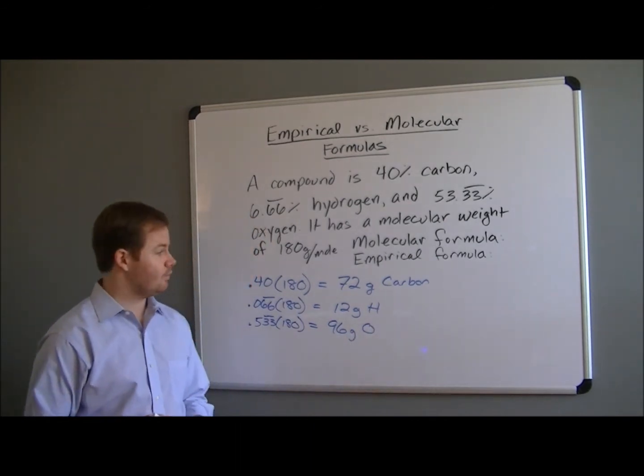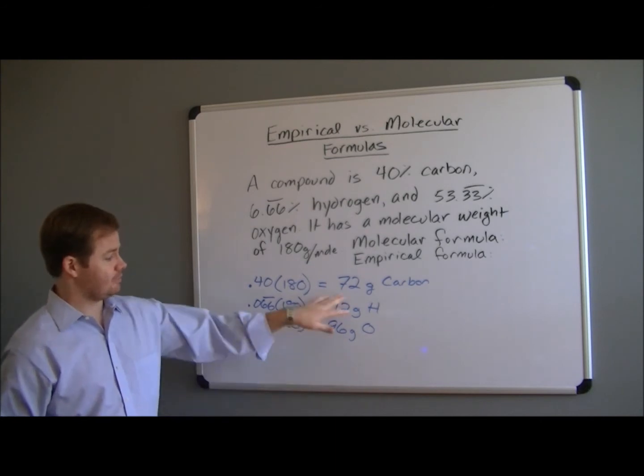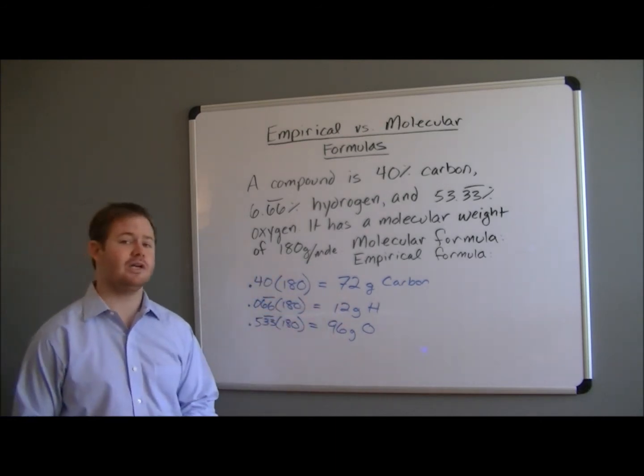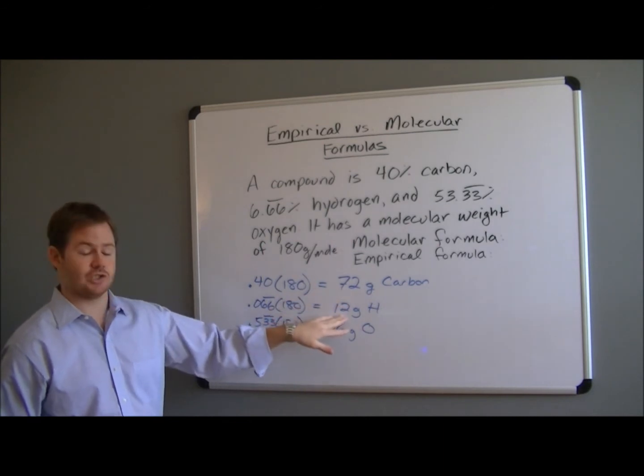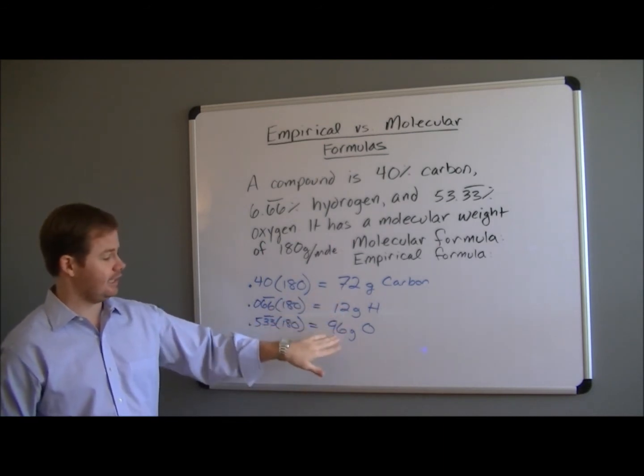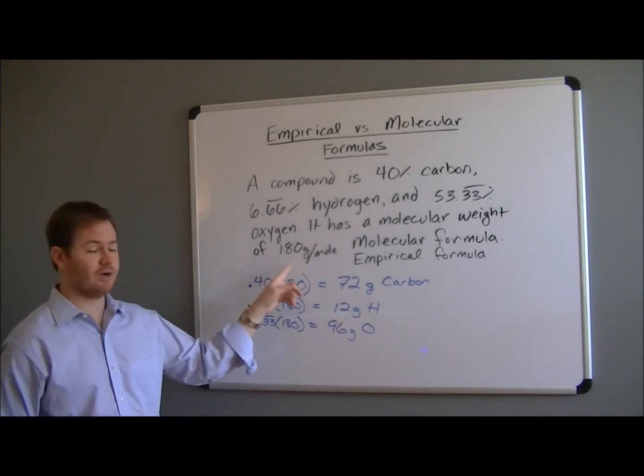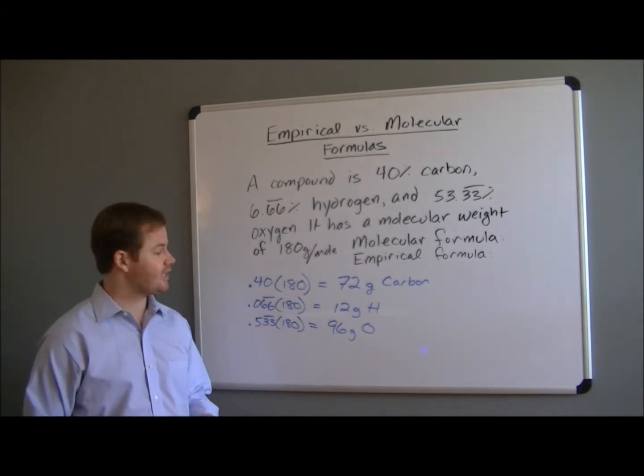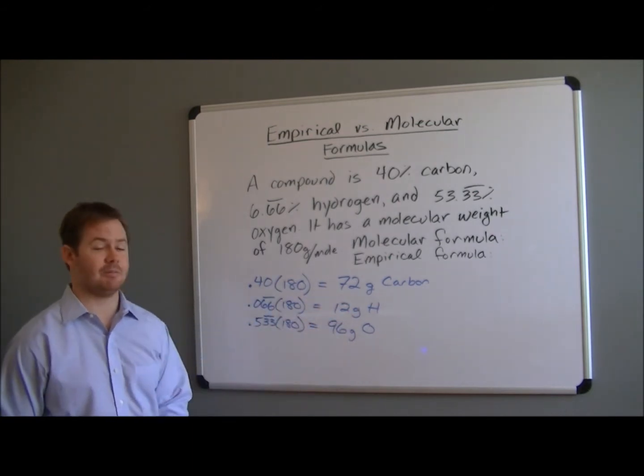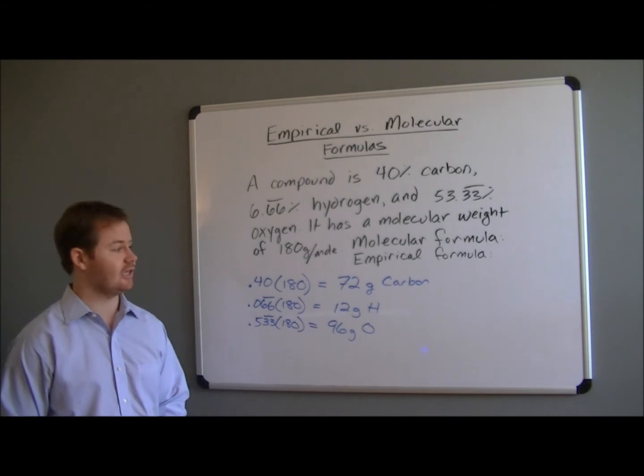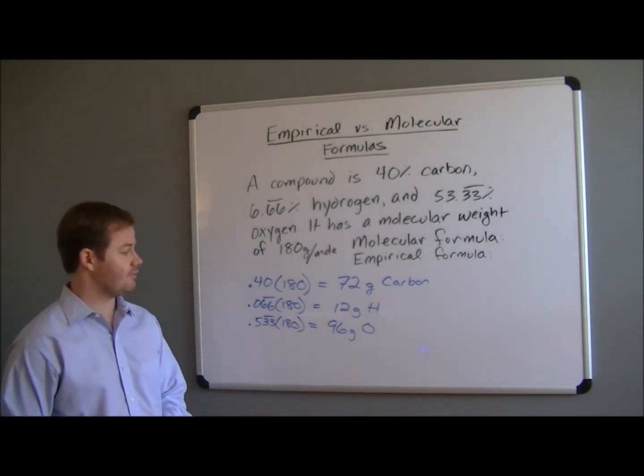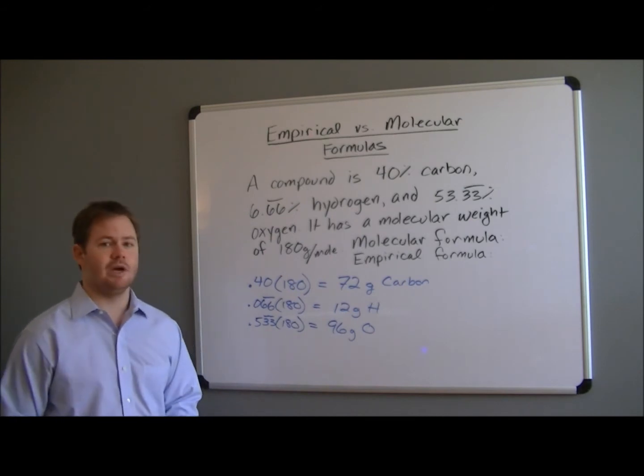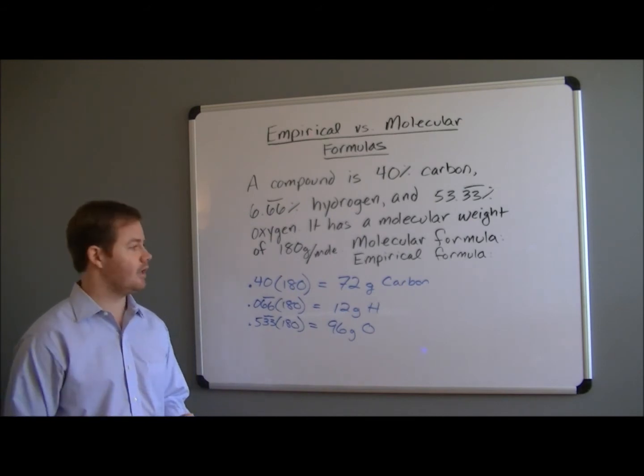So we have the grams of each that comprise our total of 180. And if you wanted to check just to make sure, if you add 72 plus 12, you get 84, and 84 plus 96 does give you 180. So that's always a quick check that you can do after that first step in a problem like this to make sure that you're still on track. So here we have 72 grams of carbon, 12 of hydrogen, 96 of oxygen, but we don't know how many of each we have.